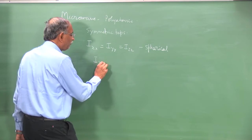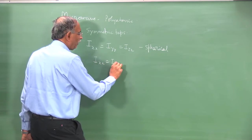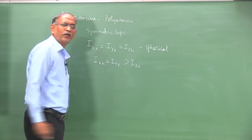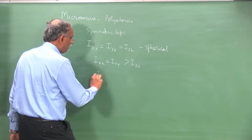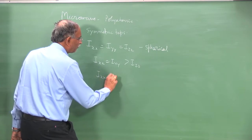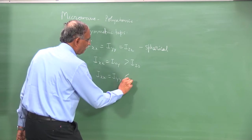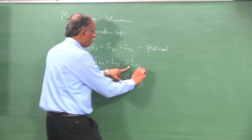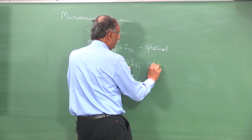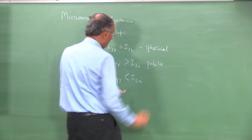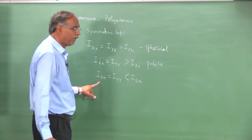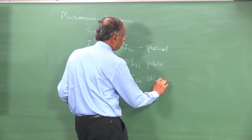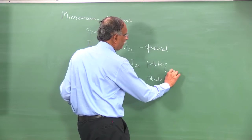Then we had the special case namely I_xx equal to I_yy less than I_zz, and this was called prolate. And if I_zz is greater than the other two equal moments of inertia it was called the oblate symmetric top. Both are symmetric tops.